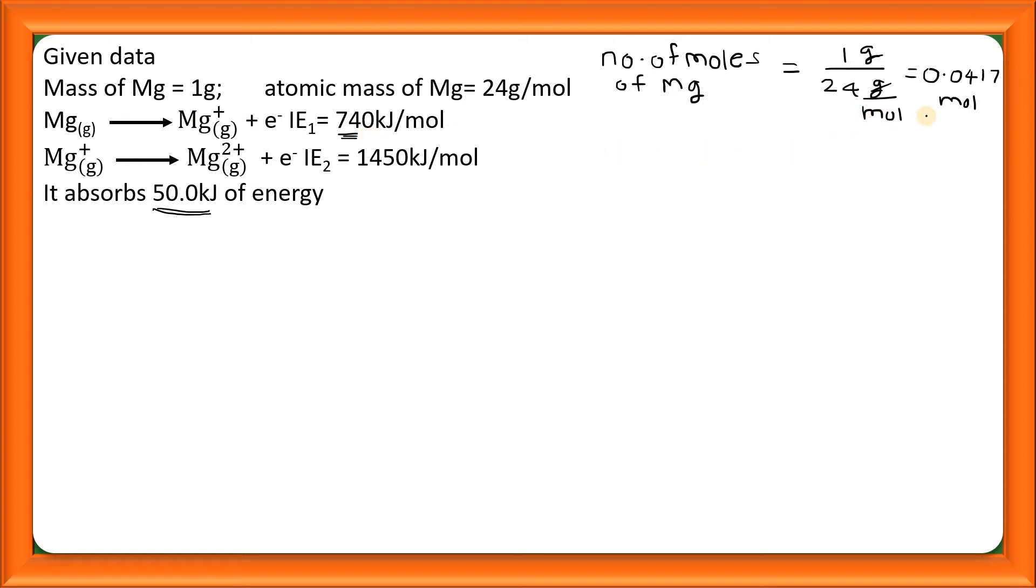Now we are having 0.0417 moles of magnesium, so we can write energy absorbed in the ionization is 0.0417 into 740. Students, yaad rakhna, 1 mole of magnesium को ionize करने के लिए 740 kilojoules लगता है, then 0.0417 moles of magnesium को ionize करने के लिए 0.0417 into 740, so it becomes equal to 30.86 kilojoules.